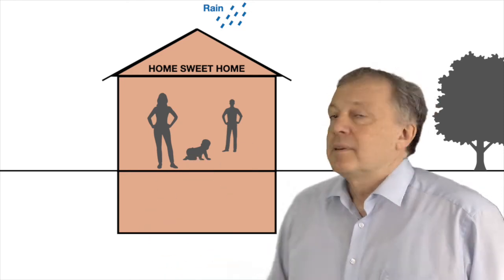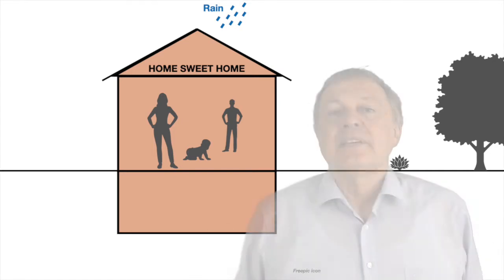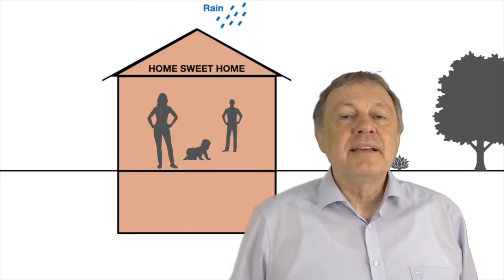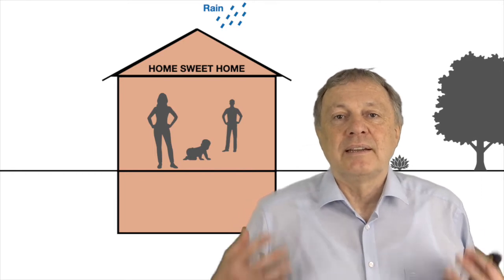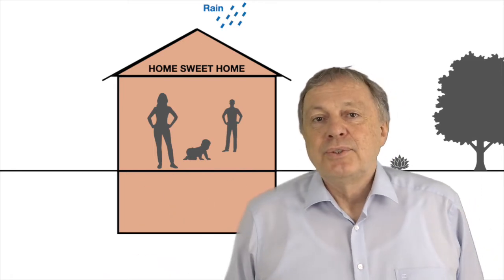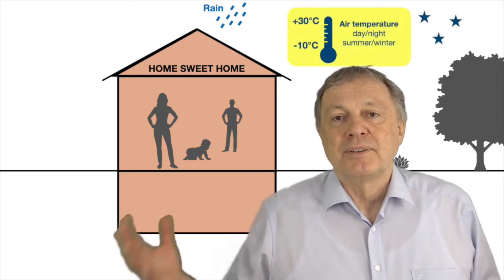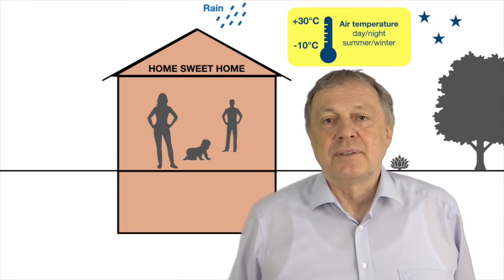The most basic thing when building a house is to have a roof above your head so you don't get wet when it rains. But that is not enough. Sometimes it's too hot or too cold outside for pleasant living — that's what we're talking about when we discuss heating and air conditioning. The example I show is from our area in the middle of Europe, but it applies to any place in the world with somewhat different outer conditions.